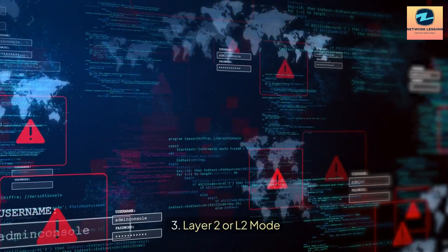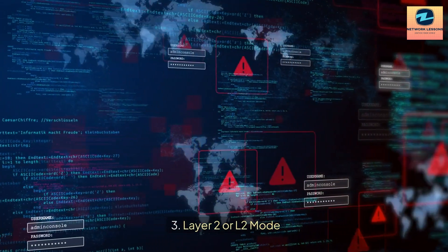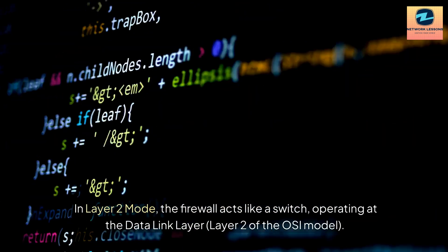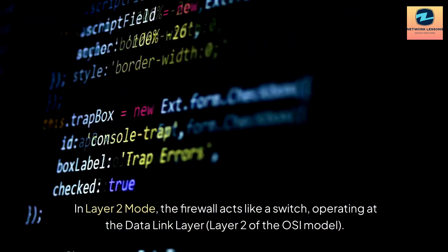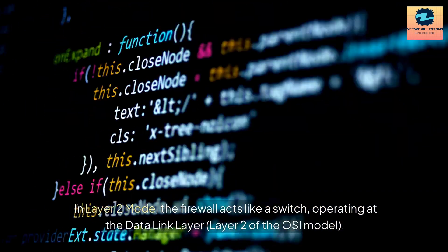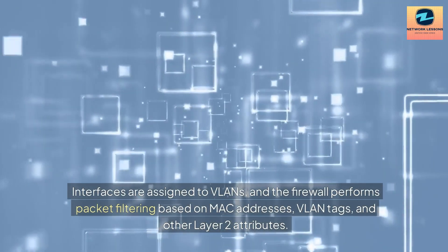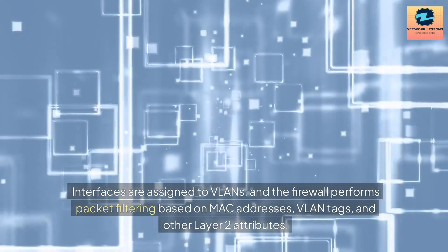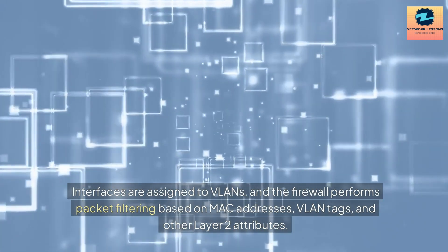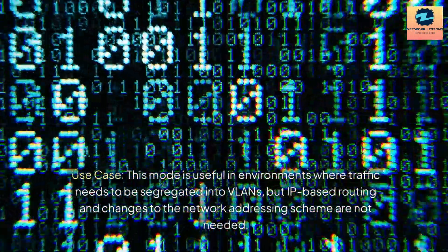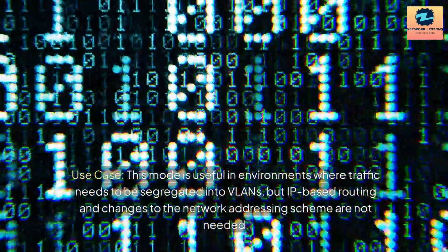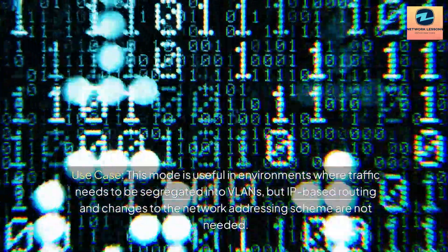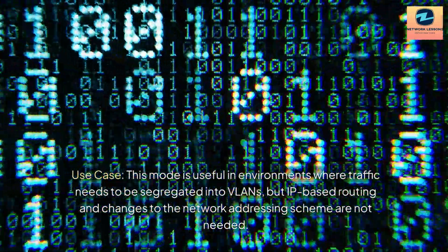3. Layer 2 or L2 Mode: In Layer 2 mode, the firewall acts like a switch, operating at the data link layer, Layer 2 of the OSI model. Interfaces are assigned to VLANs, and the firewall performs packet filtering based on MAC addresses, VLAN tags, and other Layer 2 attributes. Use Case: This mode is useful in environments where traffic needs to be segregated into VLANs, but IP-based routing and changes to the network addressing scheme are not needed.